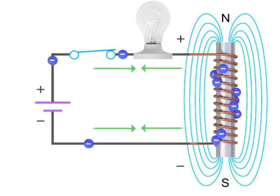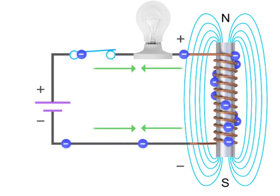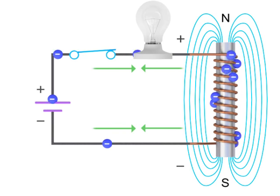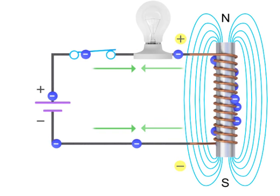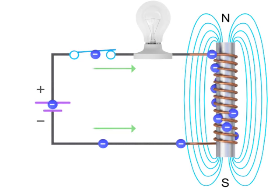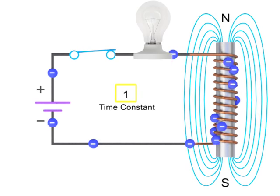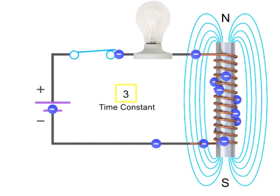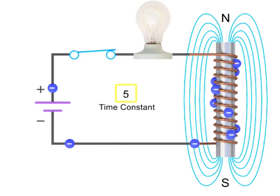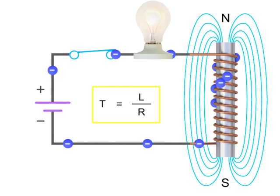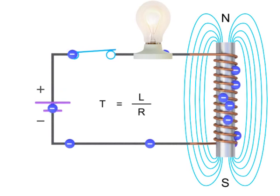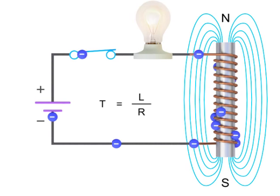However, once the electromagnetic field stops expanding based on the level of changing current, the flux will no longer generate an opposing voltage in the circuit. The current will continue to flow and reach its maximum value after 5 time constants, or 5T, where T is equal to L divided by R. The light bulb will then be at its maximum brightness.